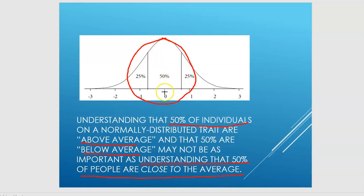Understanding that 50% of individuals in a normally distributed trait that we're measuring are above the average and 50% are below is probably not as important as understanding that 50% of people are close to the average. So here the average is zero, and then we've got these numbers here, negative one and one, and negative two and two, represent standard deviations. And that's really how the normal curve works. So 50% of everybody on this particular measure, and let's assume that this is a measure of neuroticism, one of our big five traits, 50% of everybody is between approximately two-thirds of a standard deviation below and two-thirds of a standard deviation above.